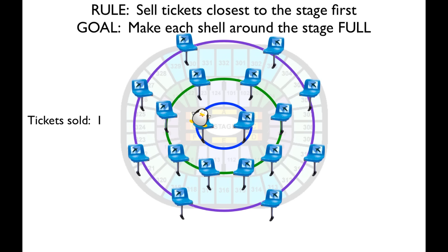So here's the first scenario. We sell one ticket. So we're going to satisfy the rule. The tickets that we sell are going to be closest to the stage. The goal is not met though, so that's not so happy. We have one empty seat in the first ring, and this is actually hydrogen. Another scenario. We sell two tickets. So the rule is they're going to be the ones closest to the stage. So that's all good, and we actually met the goal. The shell is full. So that's a really happy, stable scenario, and this is actually the element helium.